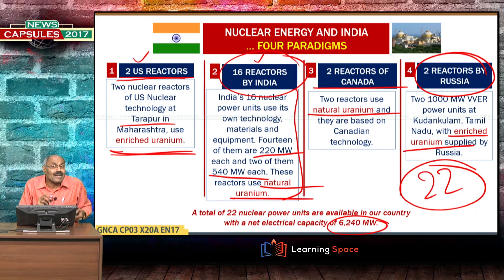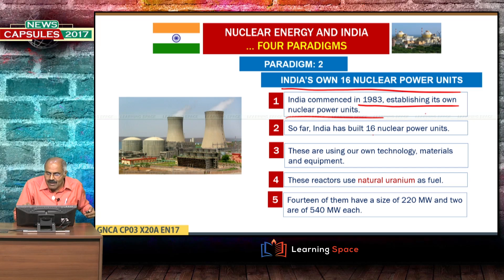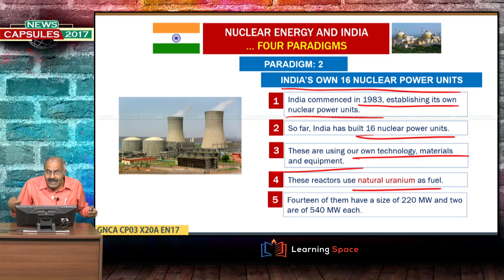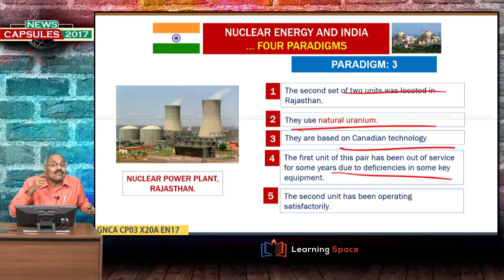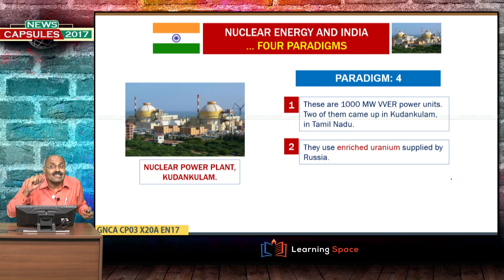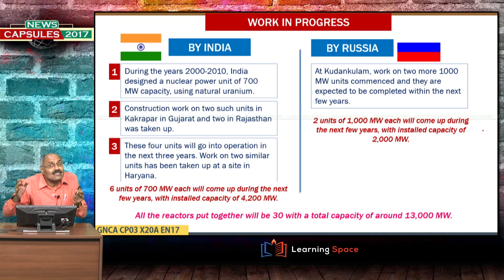Paradigm two: India's own 16 nuclear power units commenced in 1983, built with our own technology, materials, and equipment, using natural uranium as fuel. Paradigm three: two units at Rajasthan Atomic Power Station set up with Canadian technology using natural uranium — the first has some problems, the second is running satisfactorily. Paradigm four: two reactors of 1,000 megawatt each were established by Russia at Kudankulam in Tamil Nadu with enriched uranium. So far we have 22 reactors and 8 reactors with work in progress.